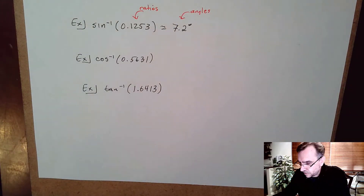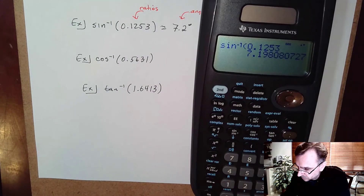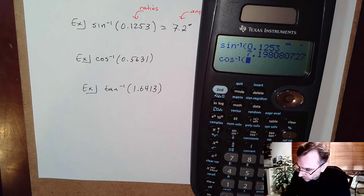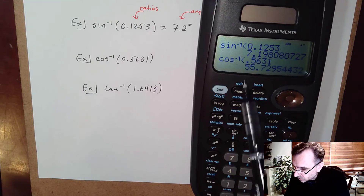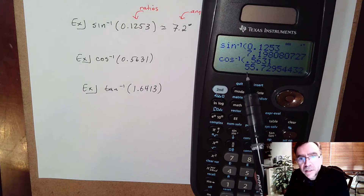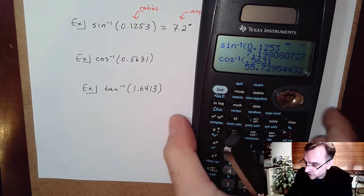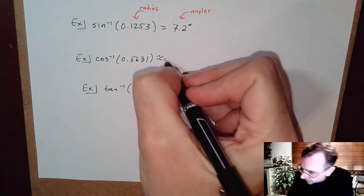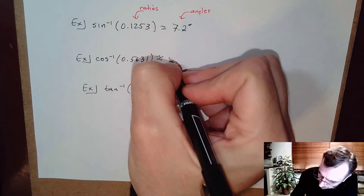Next example: cosine inverse of 0.5631. Entering that on the calculator, I get approximately 55.7 degrees.